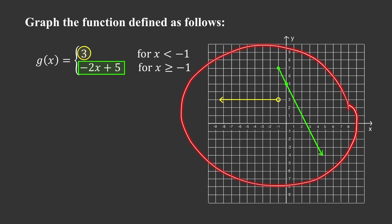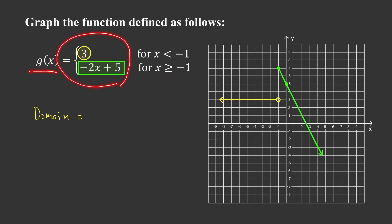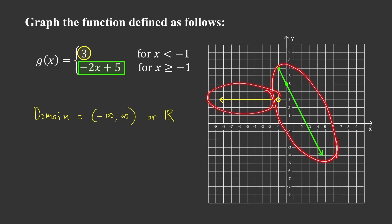The graph of g satisfies the vertical line test — any vertical line intersects the graph at most once. For the domain, we look for all admissible inputs, values of x that give real values for y. As you can see, any value of x gives a real value for g of x, so the domain is the set of all real numbers, written as negative infinity to infinity.